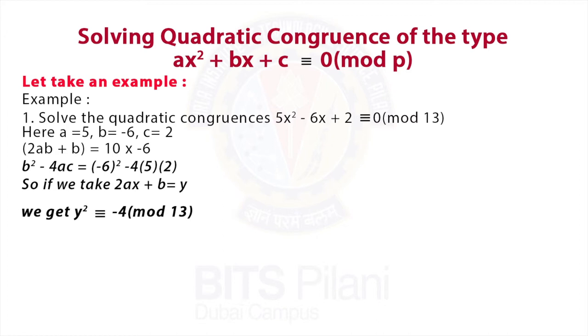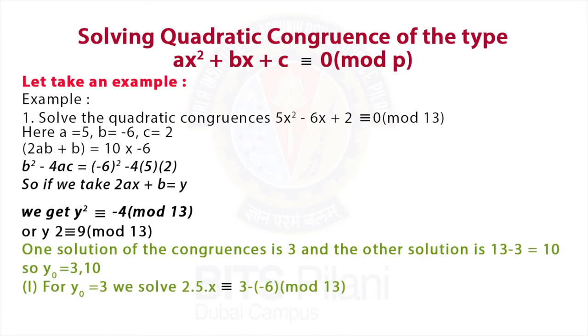So, there are two values of y₀. One is 3 and the other is 10. We will take one value at a time. For y₀ = 3,